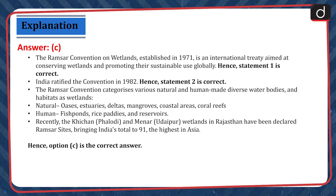The Ramsar Convention categorizes various natural and human-made diverse water bodies and habitats as wetlands. Natural examples include oases, estuaries, deltas, mangroves, coastal areas and coral reefs. Human-made examples include fish ponds, rice paddies and reservoirs. Recently, the Keetham (Falodi) and Menar (Udaipur) wetlands in Rajasthan have been declared Ramsar sites, bringing India's total to 91, the highest in Asia. Hence, option C is the correct answer.